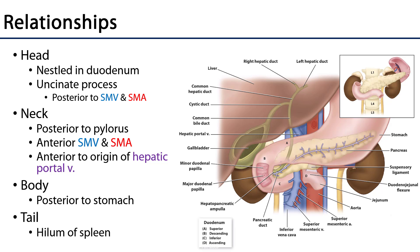The body of the pancreas is found posterior to the stomach, and the tail of the pancreas is found nestled adjacent to the hilum of the spleen. The totality of the pancreas is secondarily retroperitoneal, with the exception of the tail, which is intraperitoneal.